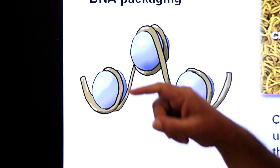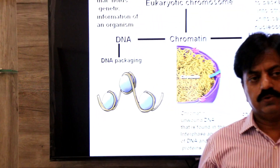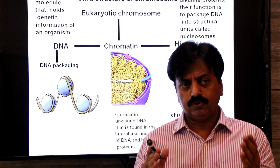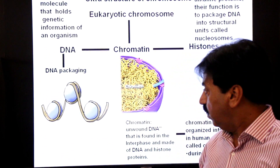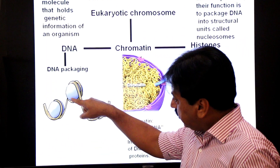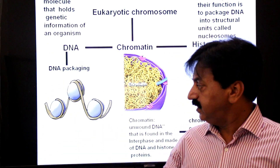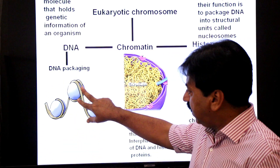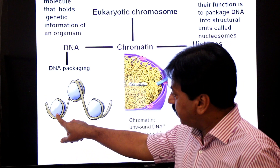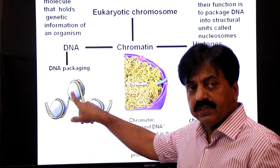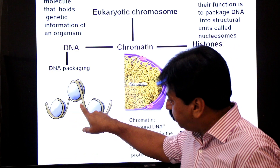The core histones form an octamer of histones: histone 2A pair, histone 2B pair, histone 3 pair, and histone 4 pair. DNA turns and coils around these core histones. Two turns of DNA around the core of histone octamer is called a nucleosome.